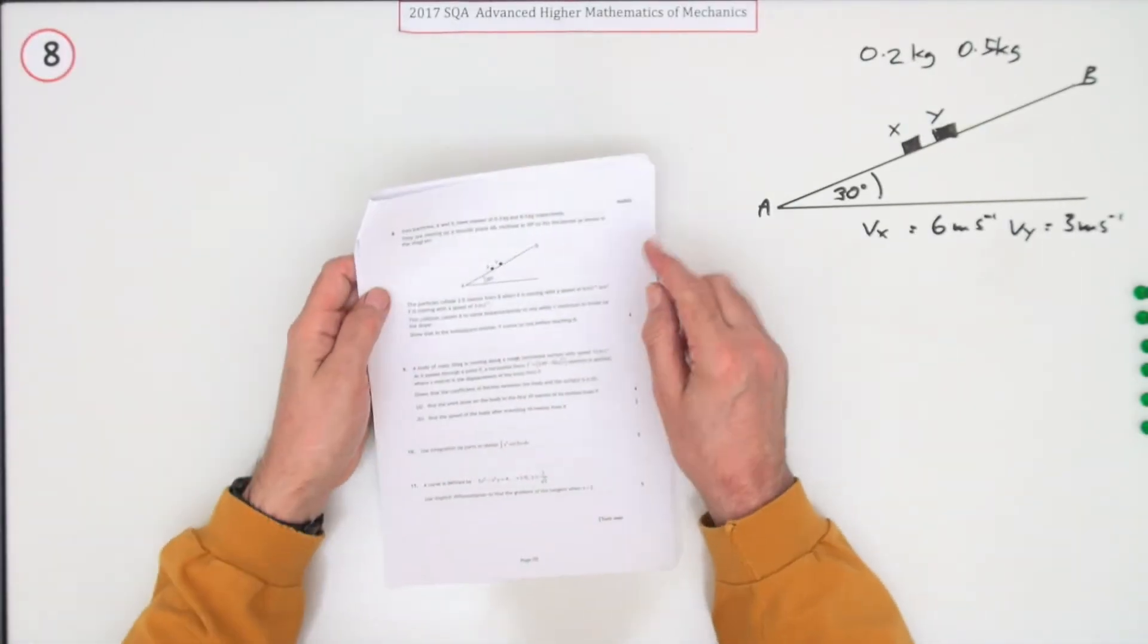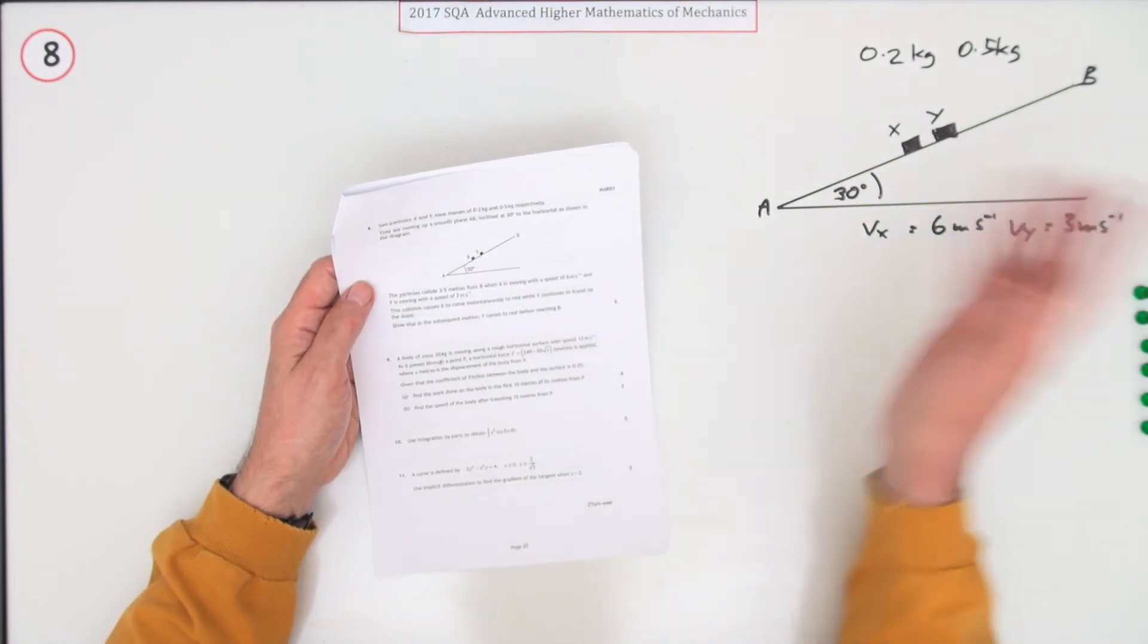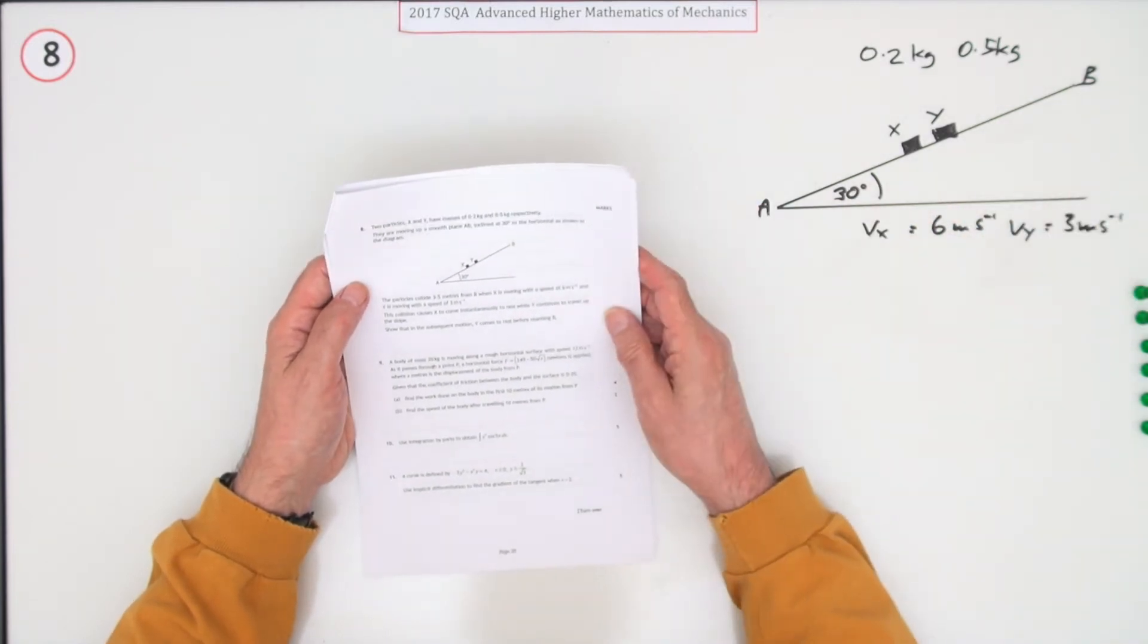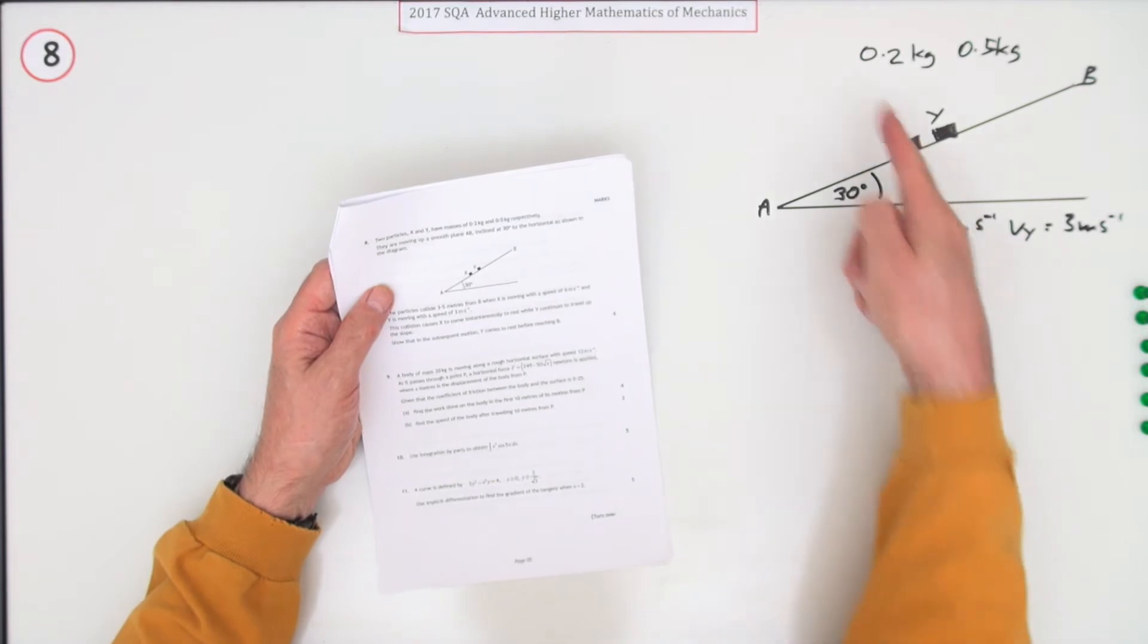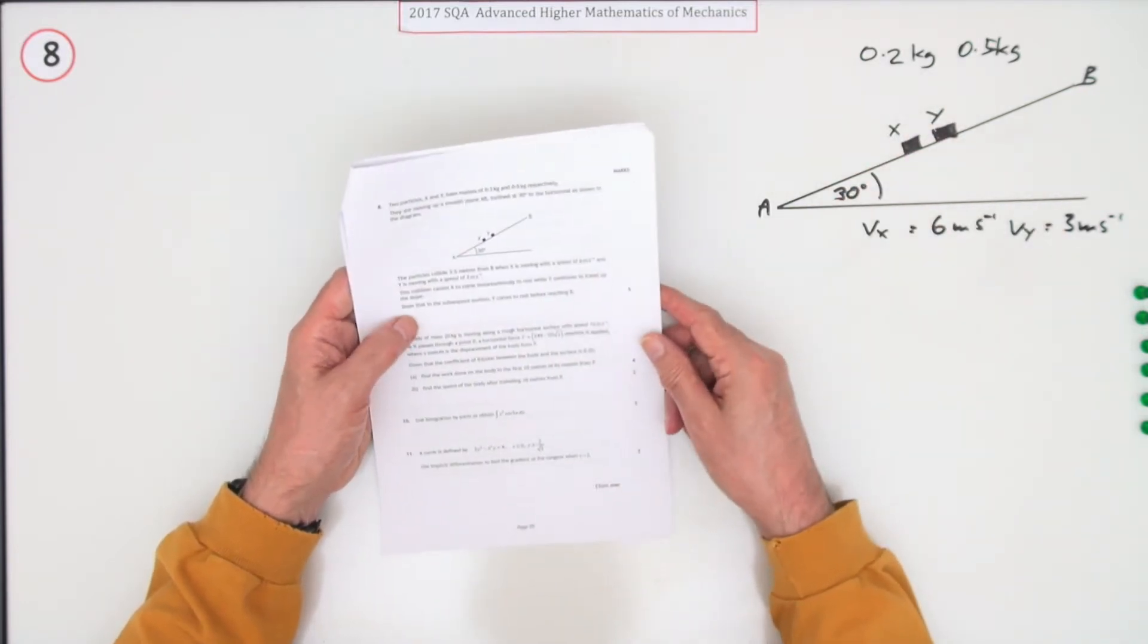Question 8 then from the 2017 Mathematics and Mechanics. Six marks this time. Here we go. Motion on an incline again. It's like number one. There's the two particles, masses 0.2 and 0.5 kilograms. The slope's at 30.